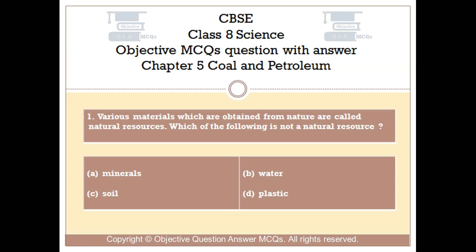Question number 1. Various materials which are obtained from nature are called natural resources. Which of the following is not a natural resource? Option A: Minerals. Option B: Water. Option C: Soil. Option D: Plastic.